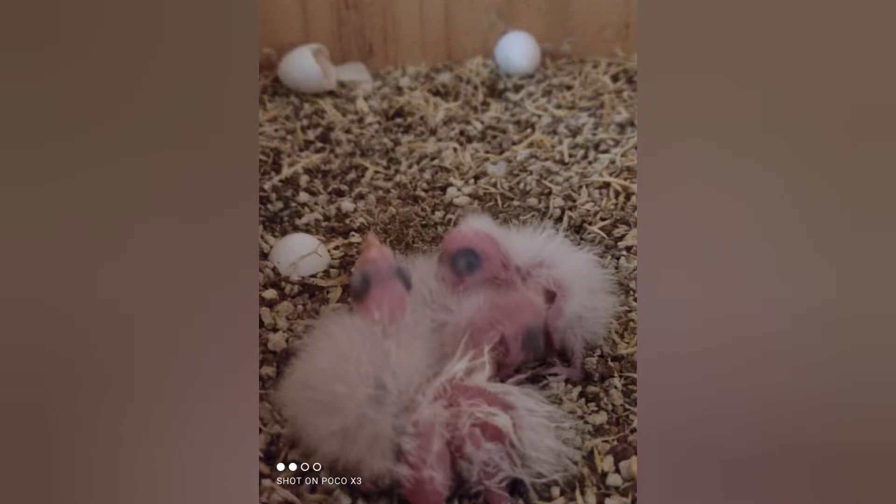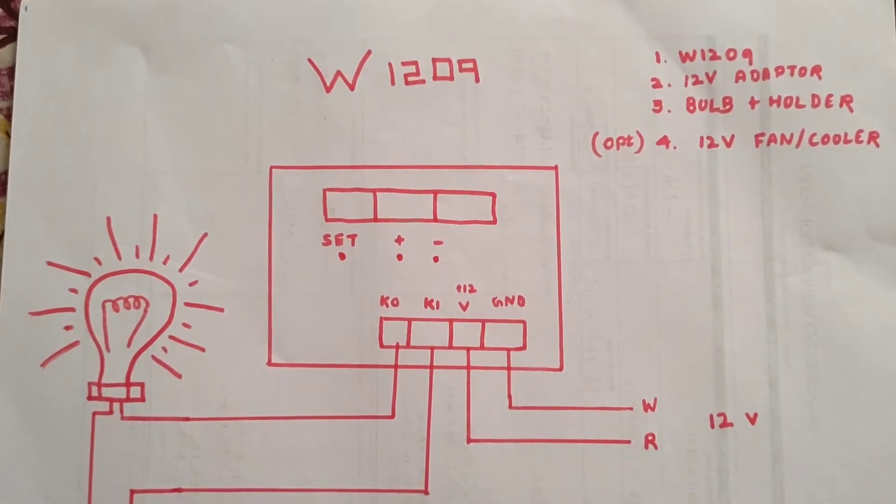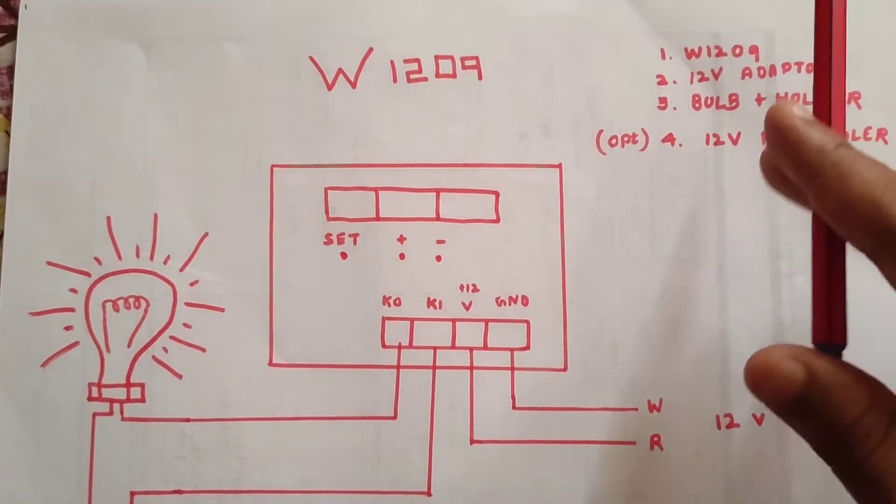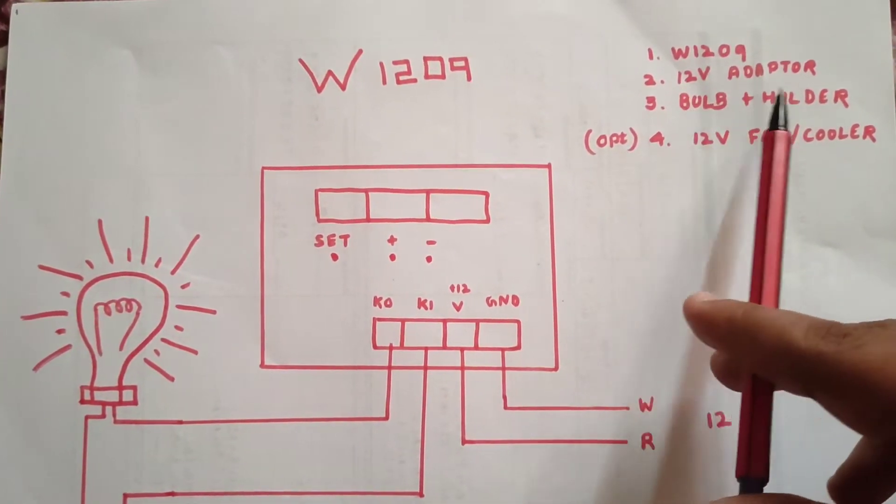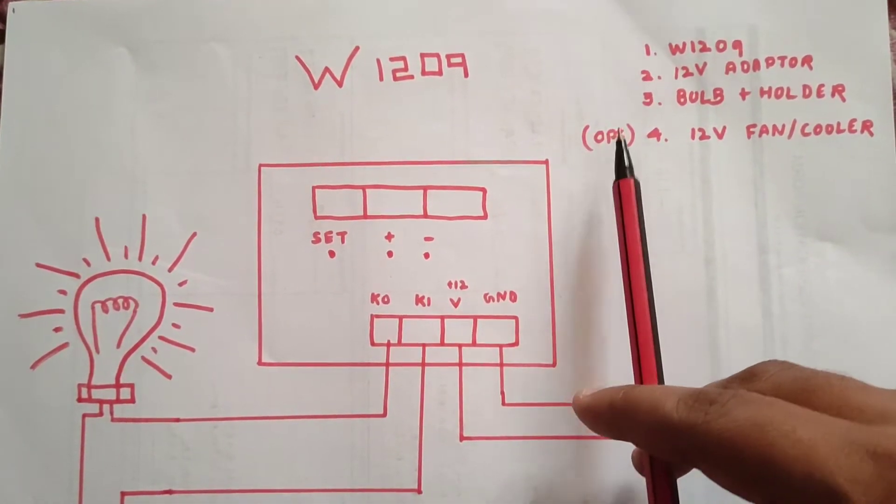I'm going to show the diagram. Let's check the diagram first. This is W1209 model diagram. We have a circuit with 12V adapter, bulb holder, and fan. We can do it without the fan.